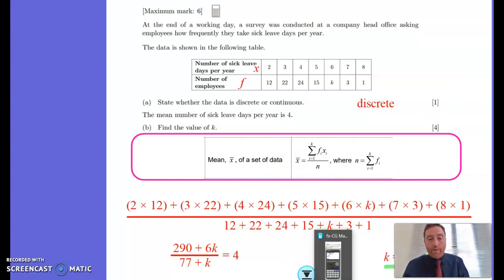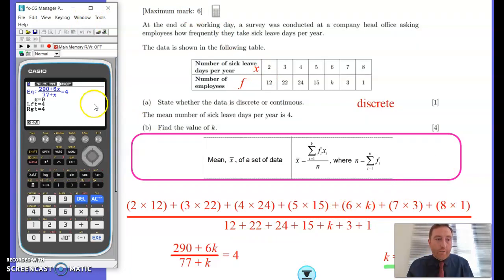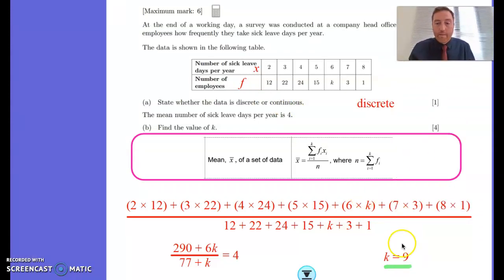And then we're going to put that into our calculator. So I go into equation, then I'm going to go into solver, which is f3 there. And I put in that equation, make it equal to 4. And when I quick click solve, I should find, in this case, I've used x instead of k. And x equals 9, or, in the case of ours, k equals 9. And that's the value we were looking for. That's the solution to part b.